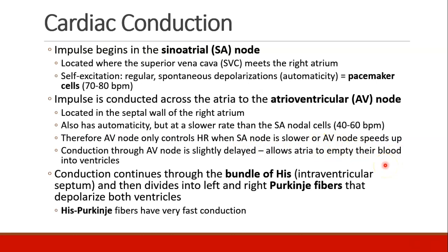As the impulse travels from the SA node across the atria to the AV node, conduction is slightly delayed, and this allows the atria to empty their blood into the ventricles. After the AV node, conduction continues through the bundle of Hiss, located in the intraventricular septum. The bundle then divides into the left and right Purkinje fibers, which provide fast conduction to both ventricles to cause depolarization and contraction.